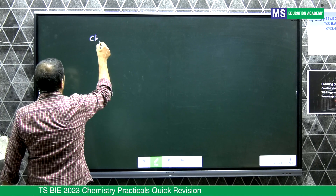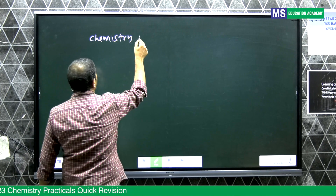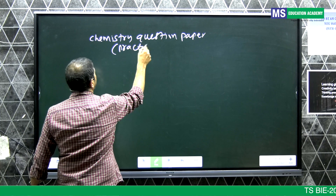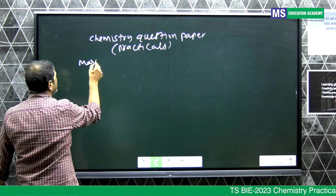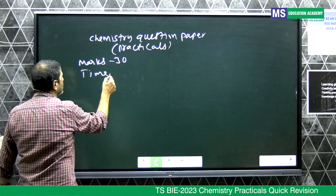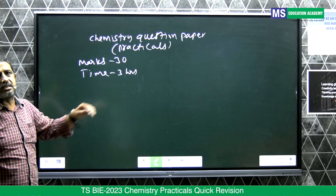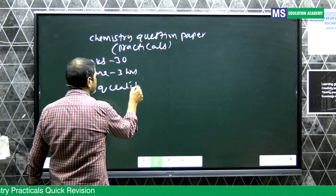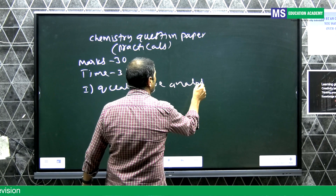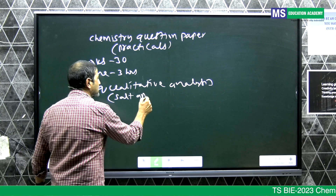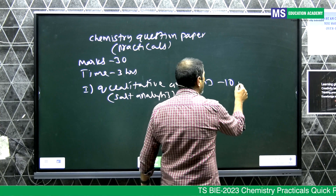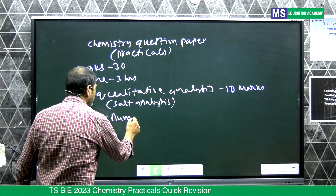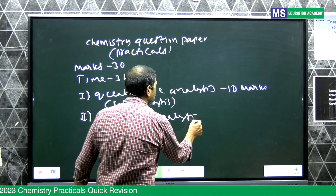The chemistry question paper for the practicals is of 30 marks and the time given to you is 3 hours. There are many parts in this practical examination question paper. Part one is qualitative analysis — also called salt analysis — which is of 10 marks. The second question is volumetric analysis, which is of 8 marks.